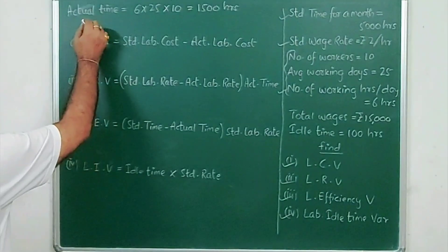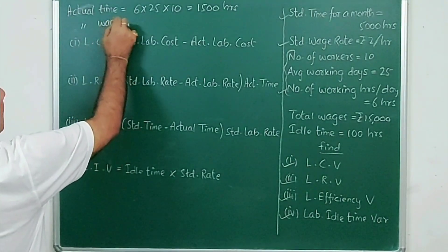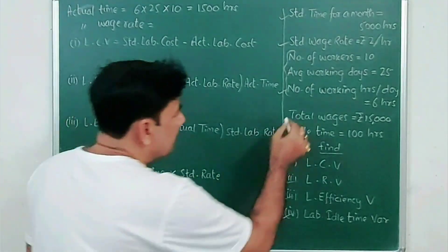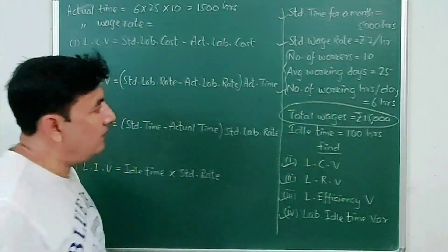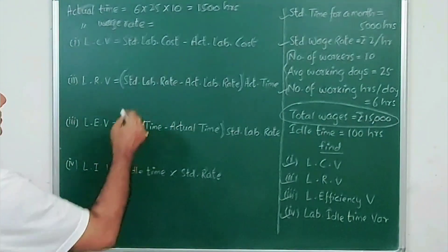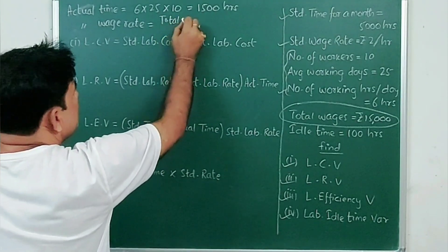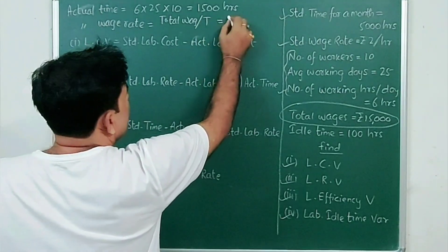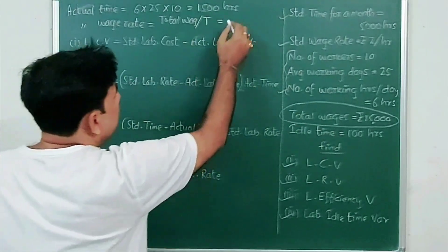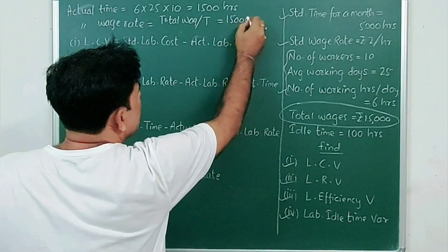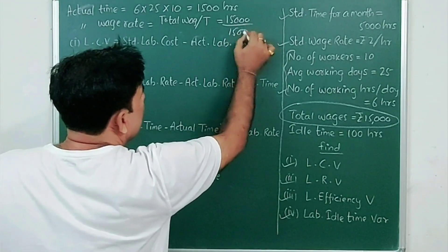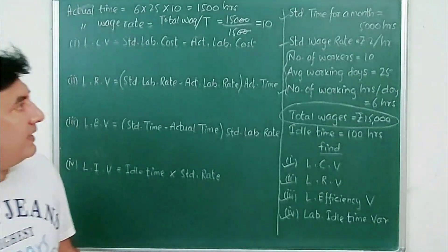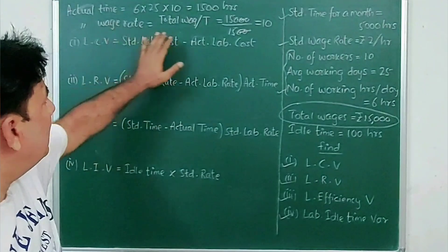Now let's find actual wage rate. Total wages are given as ₹15,000. Divide total wages by actual time: 15,000 divided by 1500 equals ₹10 per hour. So ₹10 is your actual wage rate.